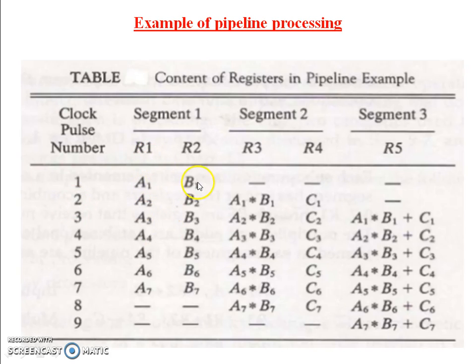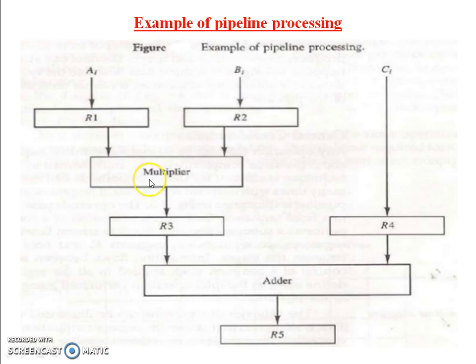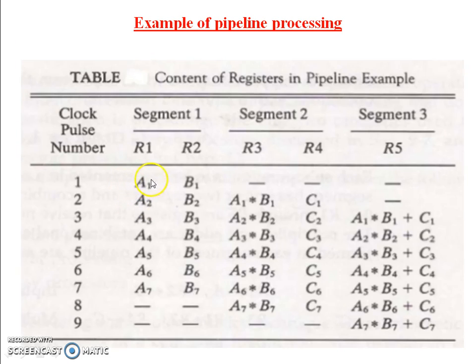When the process is going on, A1 * B1 is processed in R3. At that time, A2 and B2 become the inputs of R1 and R2. When A1 * B1 is stored in R3 and the process is ongoing in segment 2, register 4 also stores C1. At that time, R5 is null.